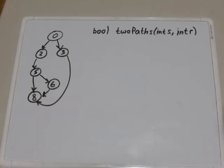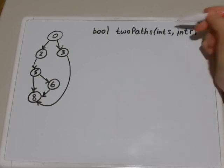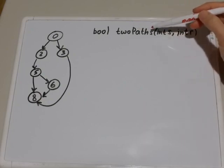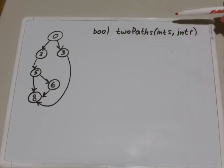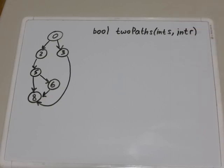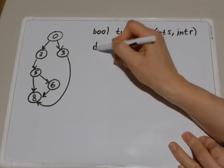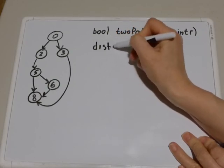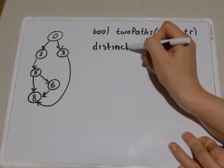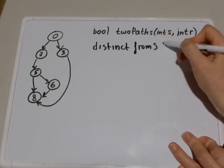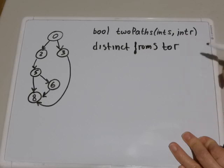In this problem we are given a directed graph and two integers s and r, and we need to write a function twoPaths that returns true if there are two distinct paths from s to r. If there are two distinct paths from s to r, it will return true, otherwise it will return false.